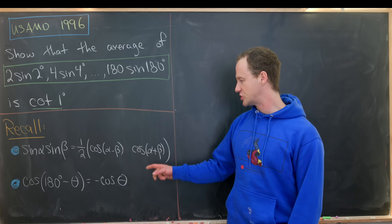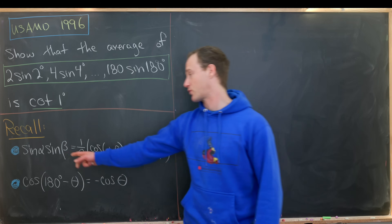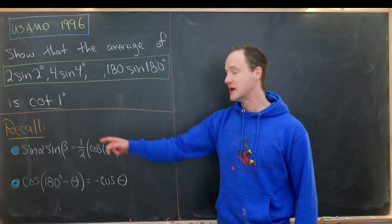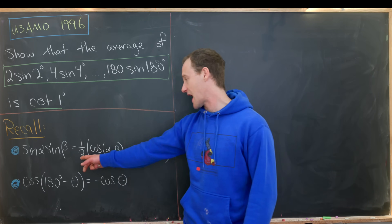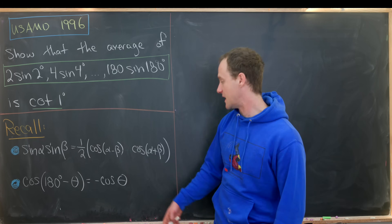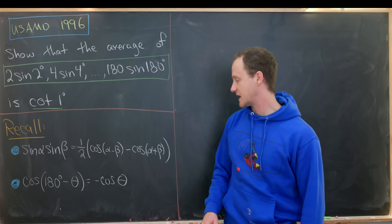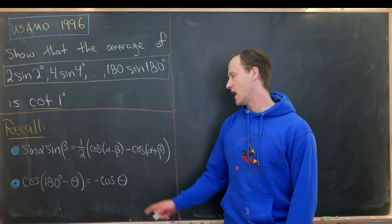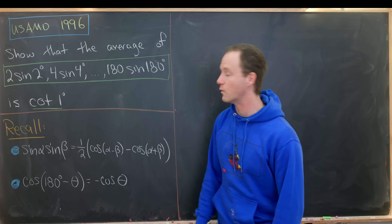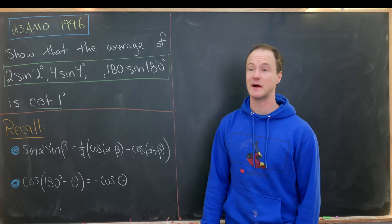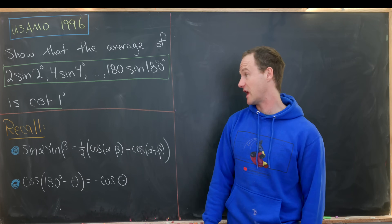We use the following two well-known trigonometric identities. One is a product-to-sum identity that says sine of alpha times sine of beta equals one half times cosine of alpha minus beta minus cosine of alpha plus beta. And then we'll use this reflection formula, which says cosine of 180 degrees minus theta is the same as minus cosine of theta.